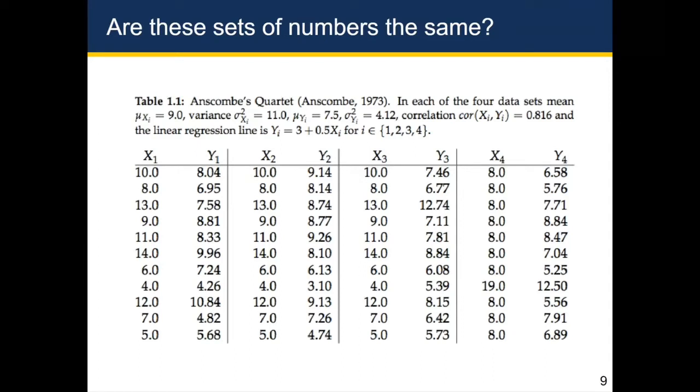And had you fit a linear regression line to the relationship between X and Y, which is also known as a best fit line, you would have gotten the same exact equation resulting from each of these four datasets, even though these four datasets are pretty different.